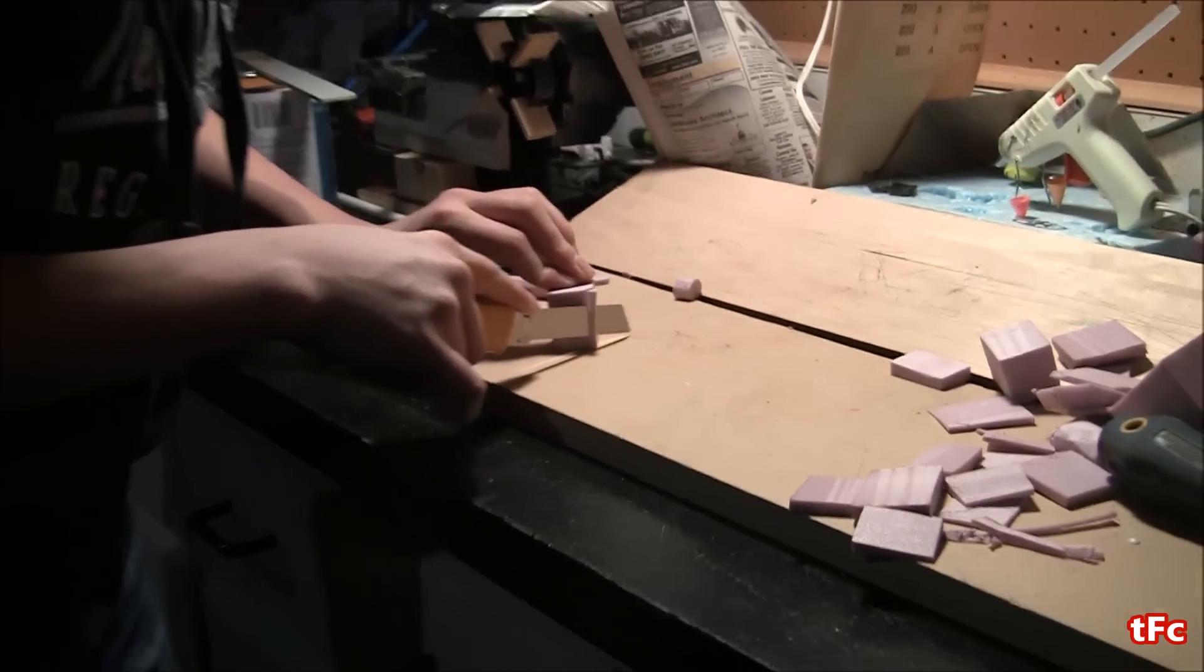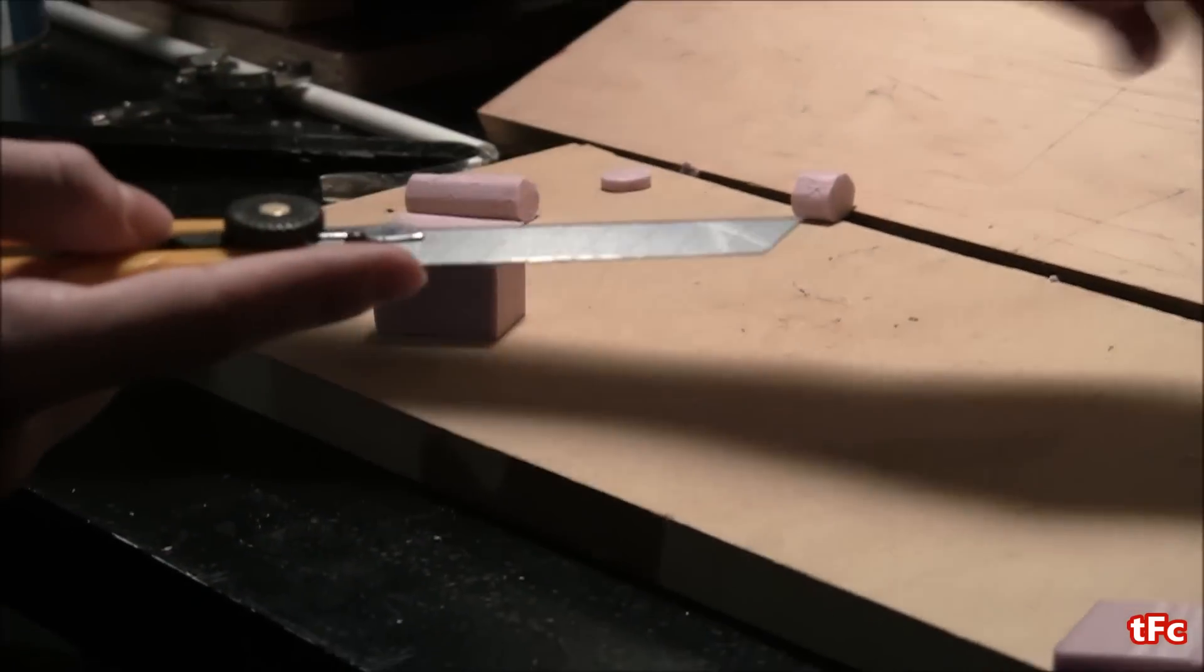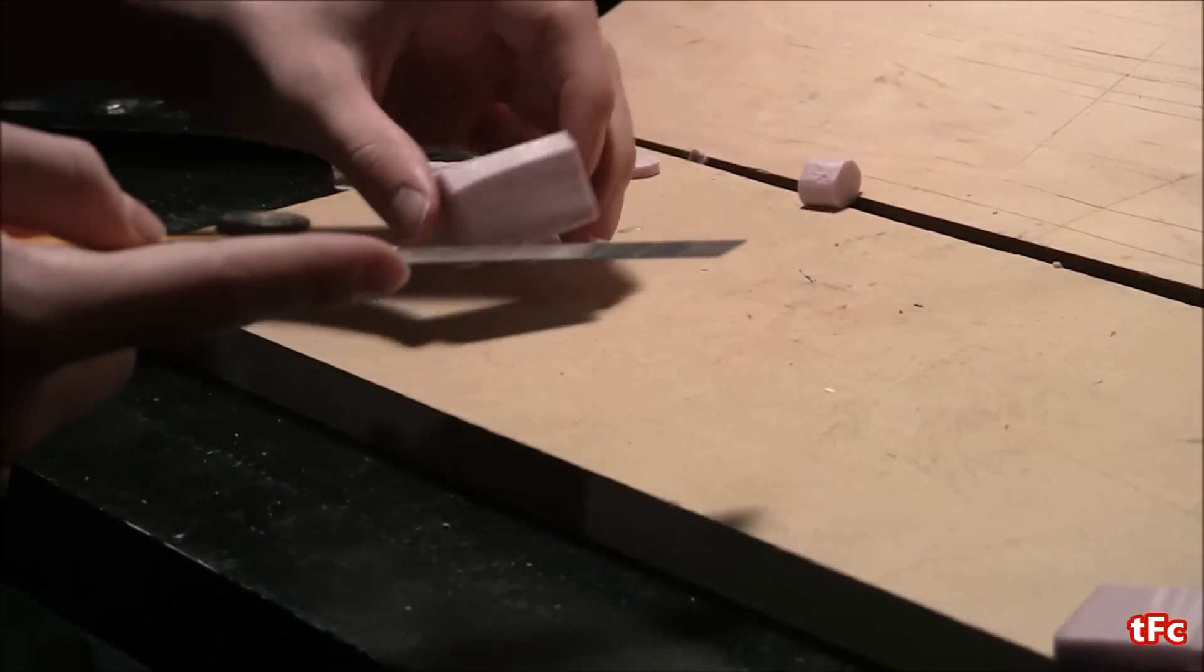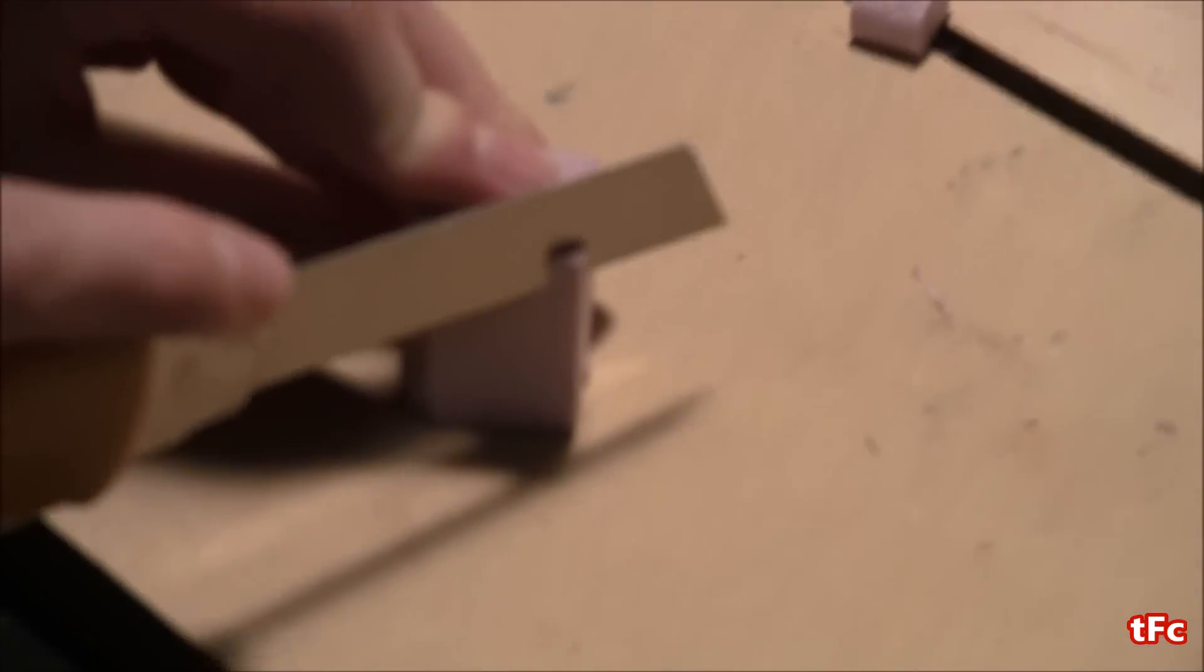So once that's as smooth as I want it I'm going to start working on the head of the hammer which is again just a rectangle that I'm going to cut the edges off of to bevel it a bit. And once that's done we can start assembling the pieces.